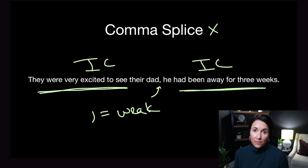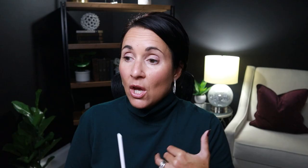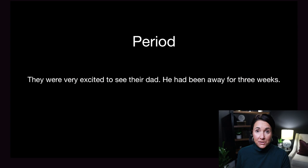I see people do this in their writing and on exams all the time. So whenever you're looking at your exam or editing your writing, always check both sides of the punctuation to make sure you're not separating two independent clauses with just a comma. The most obvious fix is simply putting a period in between the two independent clauses: 'They were very excited to see their dad. He had been away for three weeks.' That's one fix.